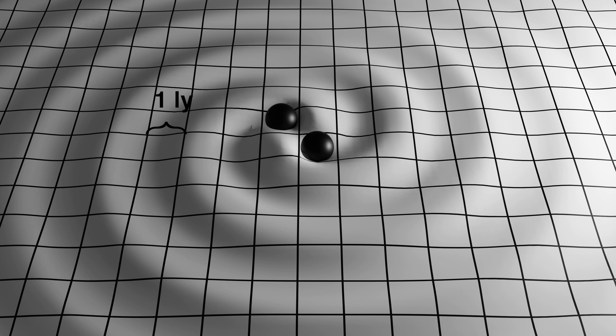If each square is one light year, and the peaks of these waves are two squares apart, we would say that these gravitational waves have a wavelength of two light years.